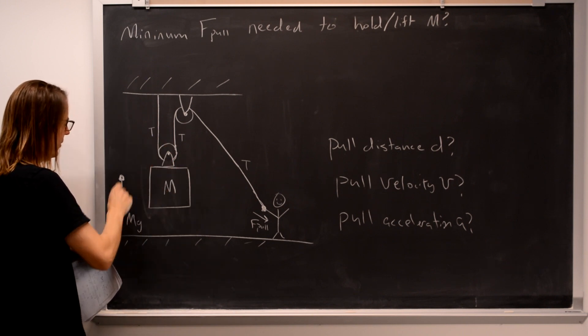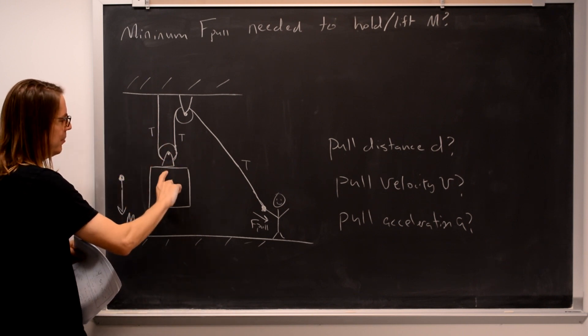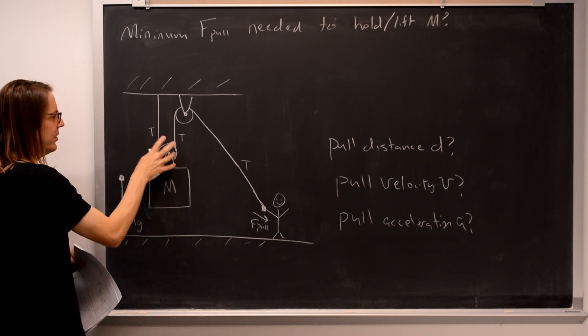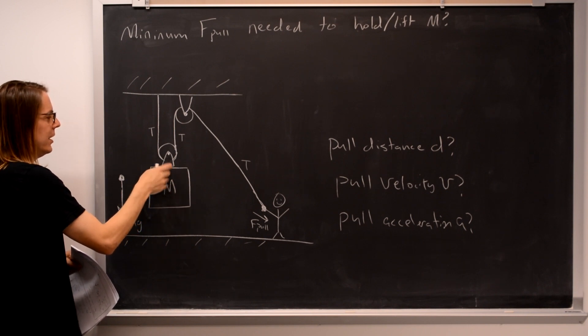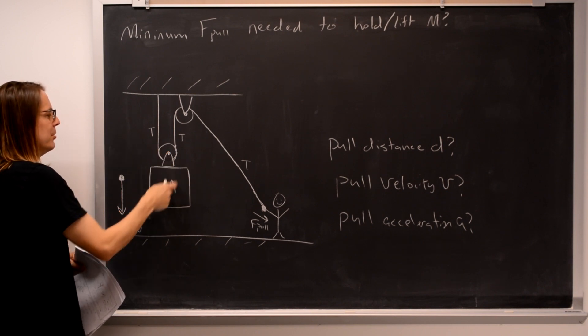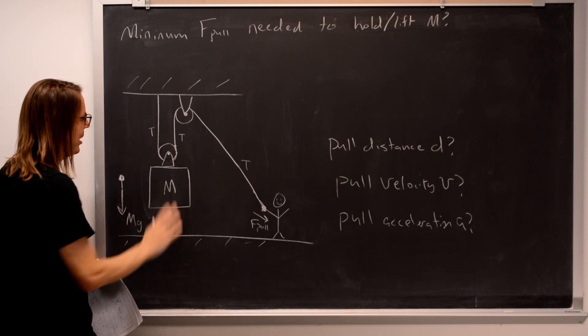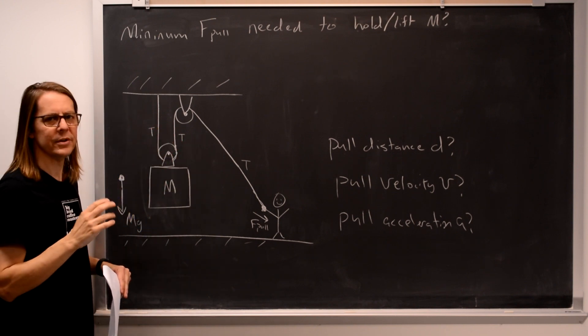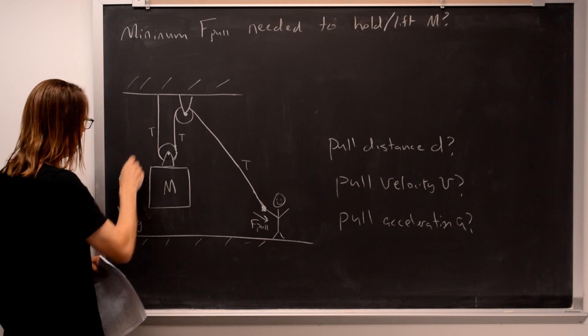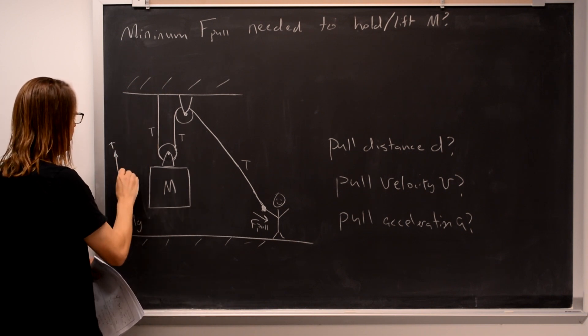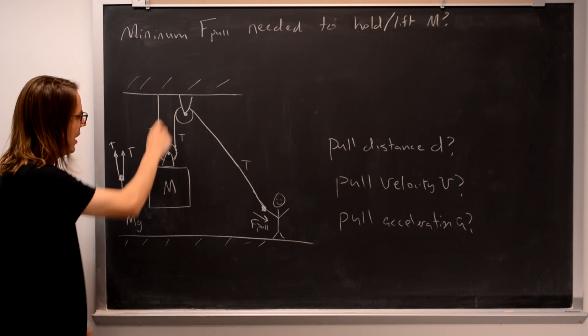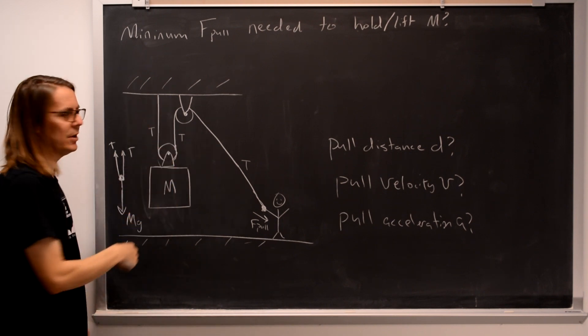So MG pulls it down. If you think of it as the mass and the pulley, then that's just MG applied directly. If you think of it as just the pulley, it's then just the action-reaction pair of the mass on the pulley and the pulley on the mass. Think of it as the mass and the pulley. What's pulling it up is the rope's tension, but it's being applied twice because there's two ropes.